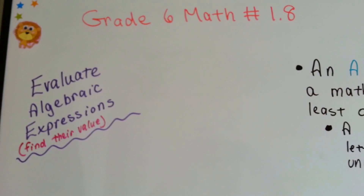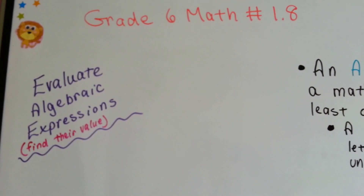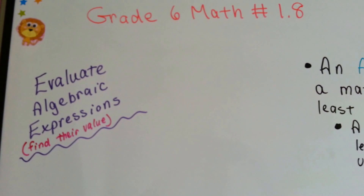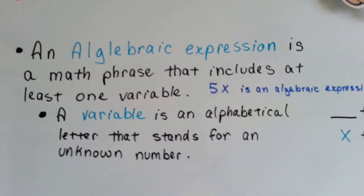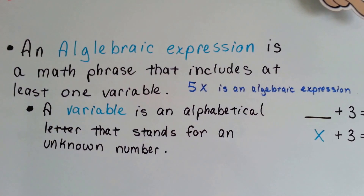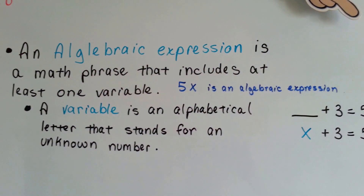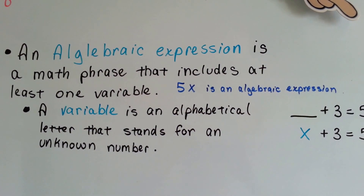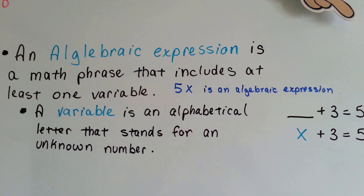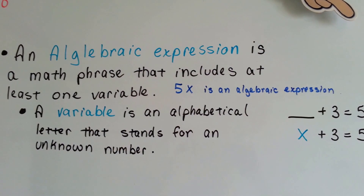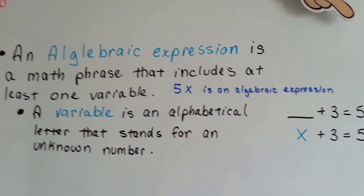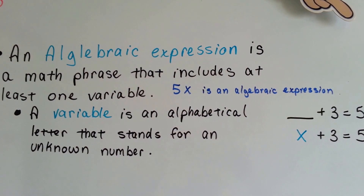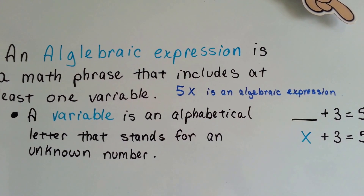Grade 6 math, lesson 1.8: evaluate algebraic expressions. Remember, an algebraic expression is a math phrase that includes at least one variable. So 5x is an algebraic expression just by itself — it doesn't need a plus 3 or anything like that. 5x by itself is considered one.